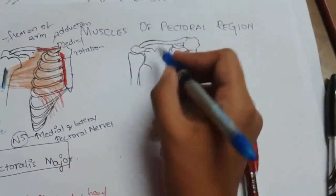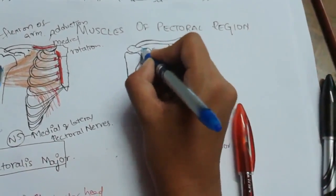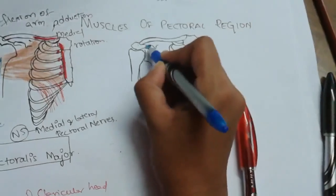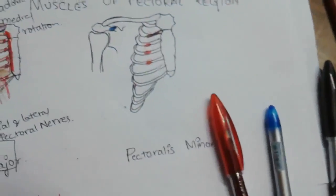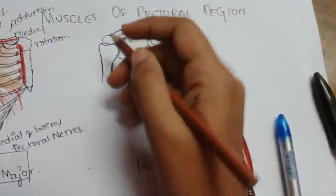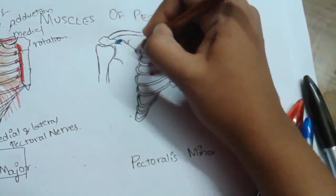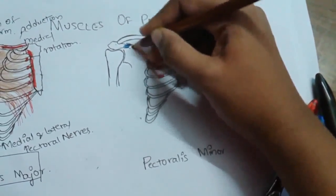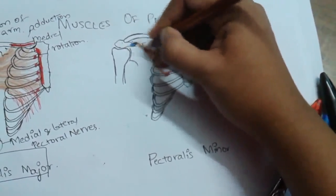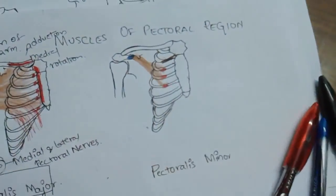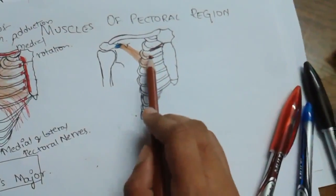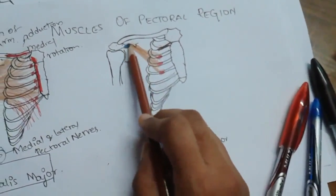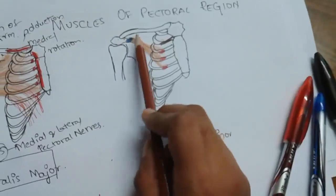The insertion of pectoralis minor is to the tip of the coracoid process of the scapula. On the scapula there is the coracoid process, and the muscle is inserted there. Origin is from the 3rd, 4th, and 5th ribs, and insertion is to the tip of the coracoid process of the scapula.